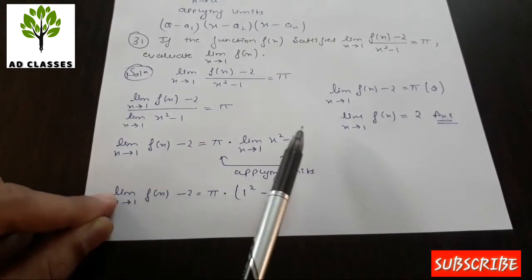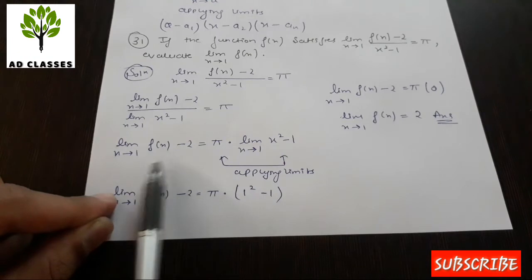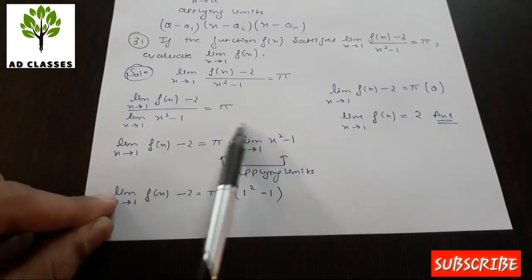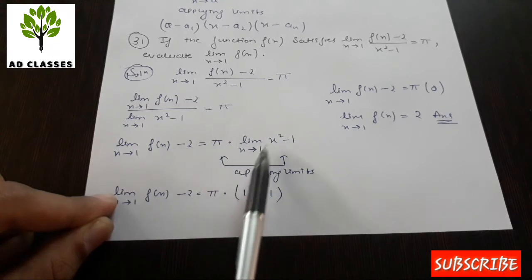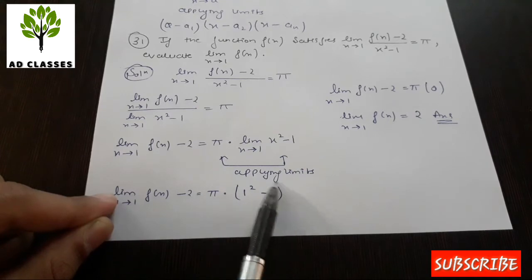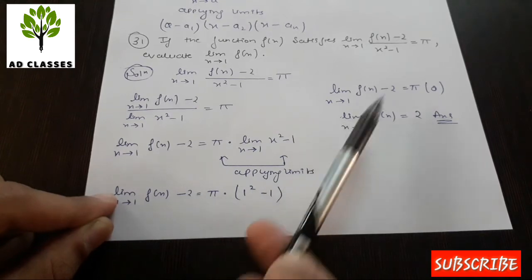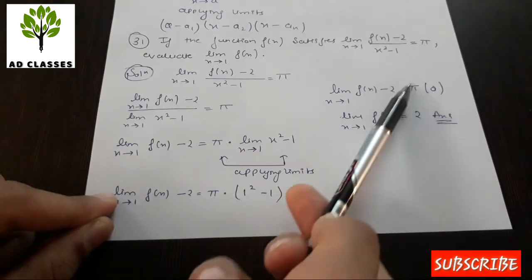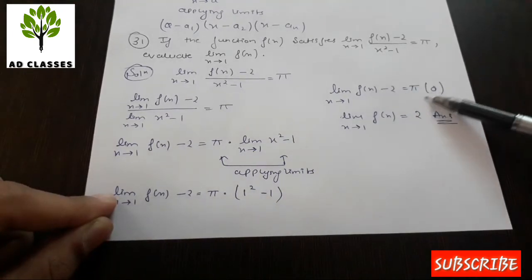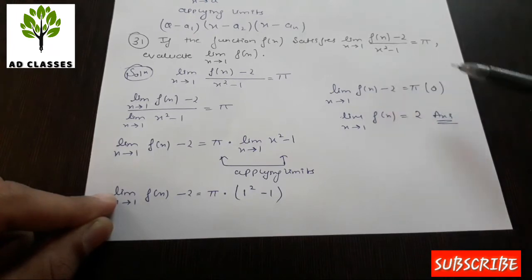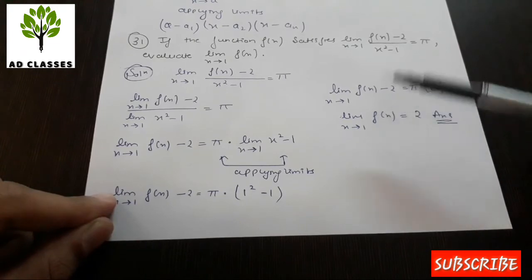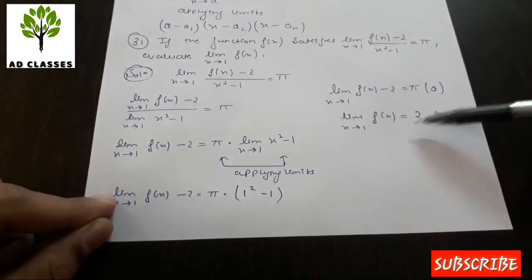Now we apply the limit on the right side. As x tends to 1, x² = 1² = 1, so x² - 1 = 0. Therefore π multiplied by 0 equals 0. This gives us limit as x tends to 1 of [f(x) - 2] = 0, which means f(1) - 2 = 0, so f(1) = 2.